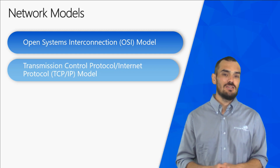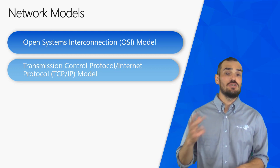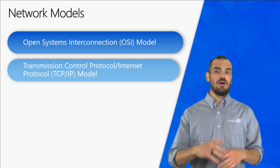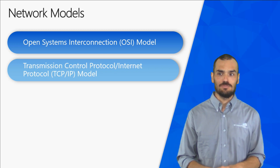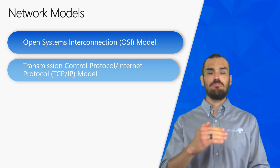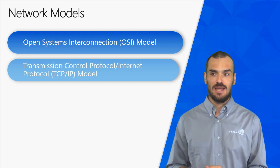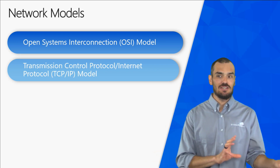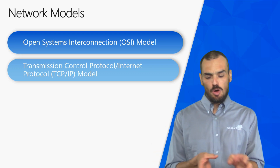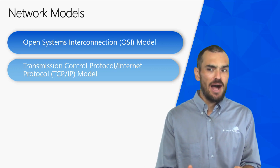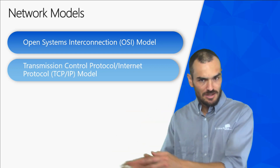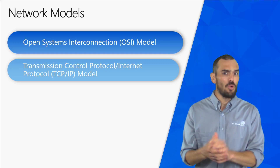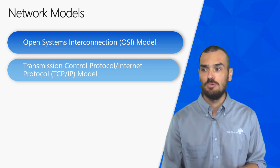These models consist of layers, and the layers serve two functions depending upon how the model is being used. If you're using the OSI model to determine how one system talks to another, you think of the layers as a step-by-step breakdown of that communication. If you're using the model to classify a device or a protocol, you think of the layers like a label or a box — this device goes into this box because it does those things. It really just organizes those items and defines their roles.